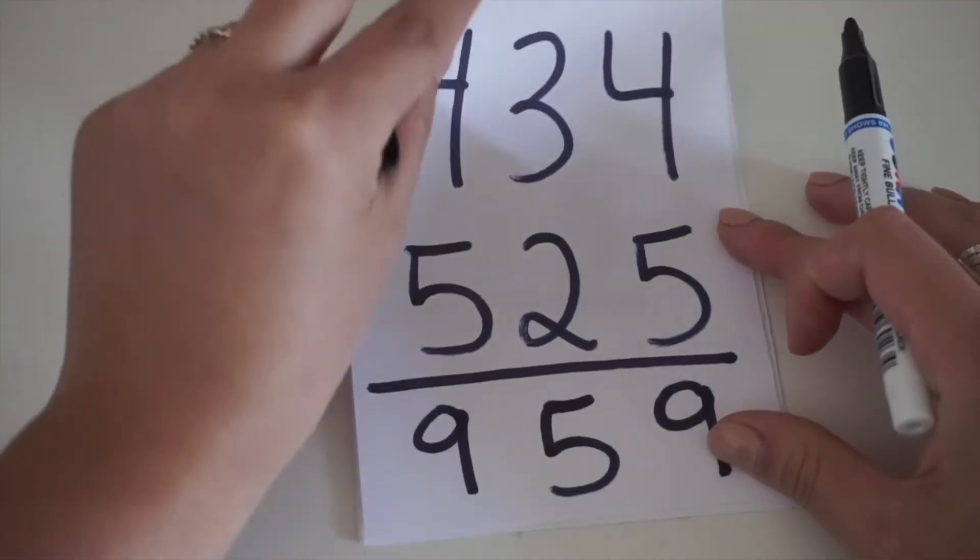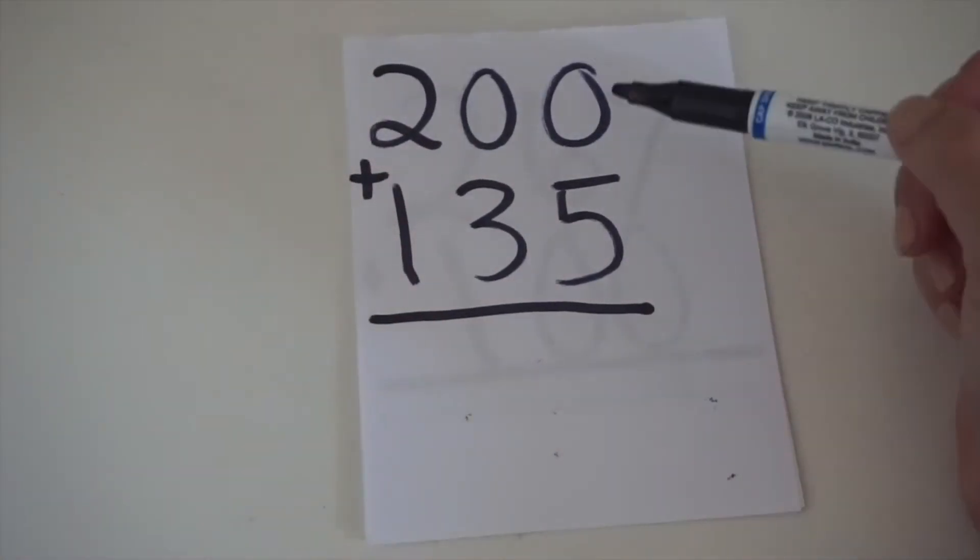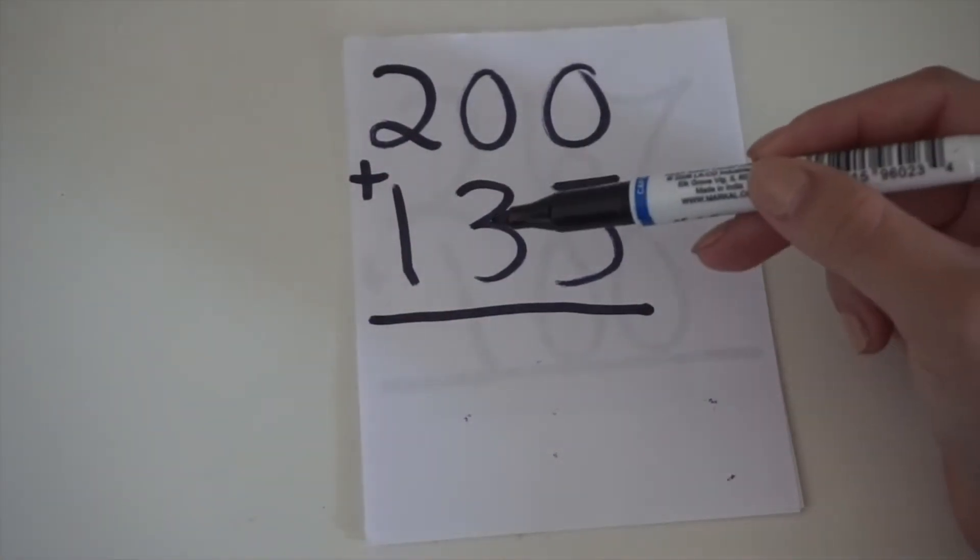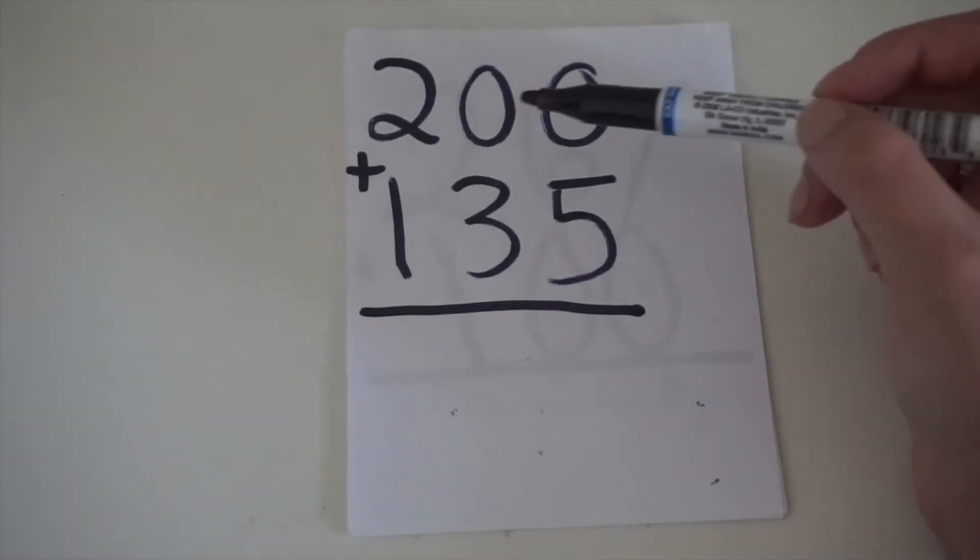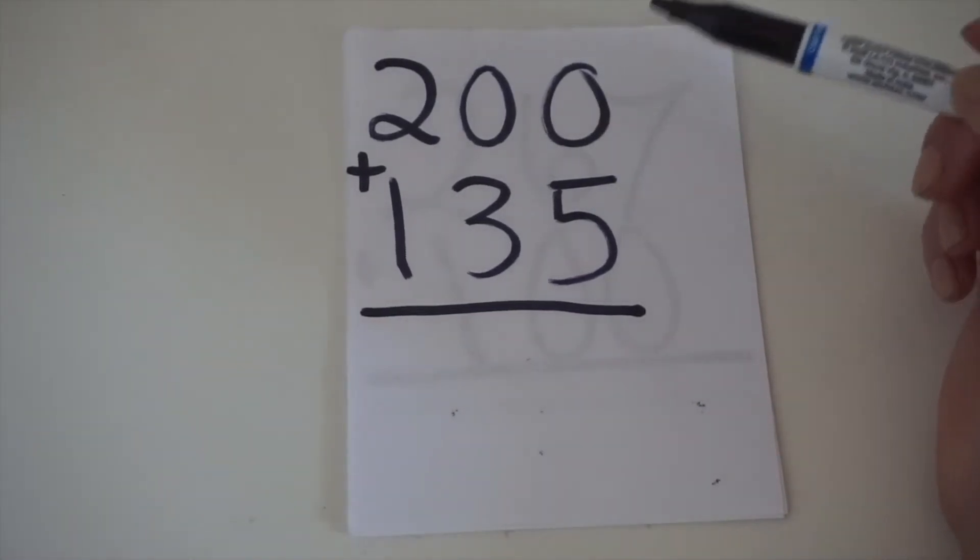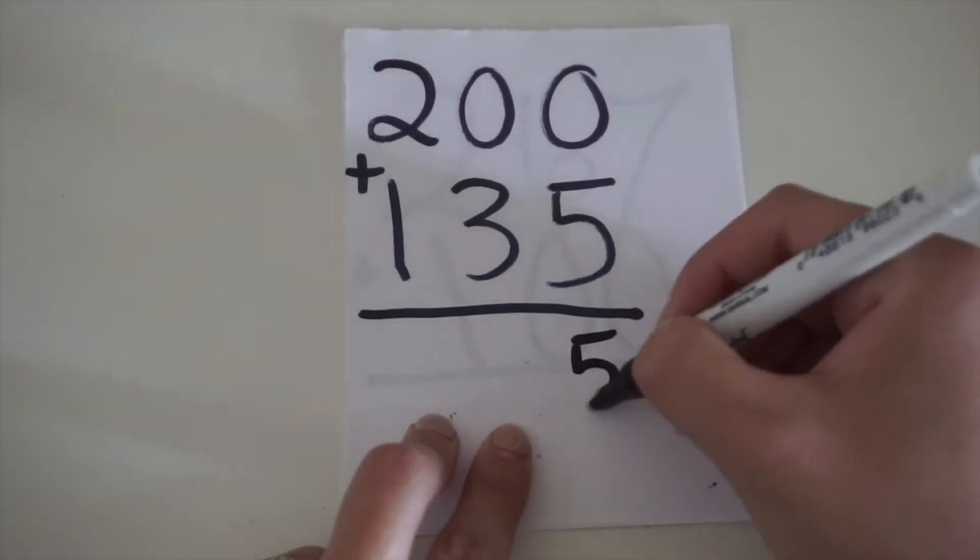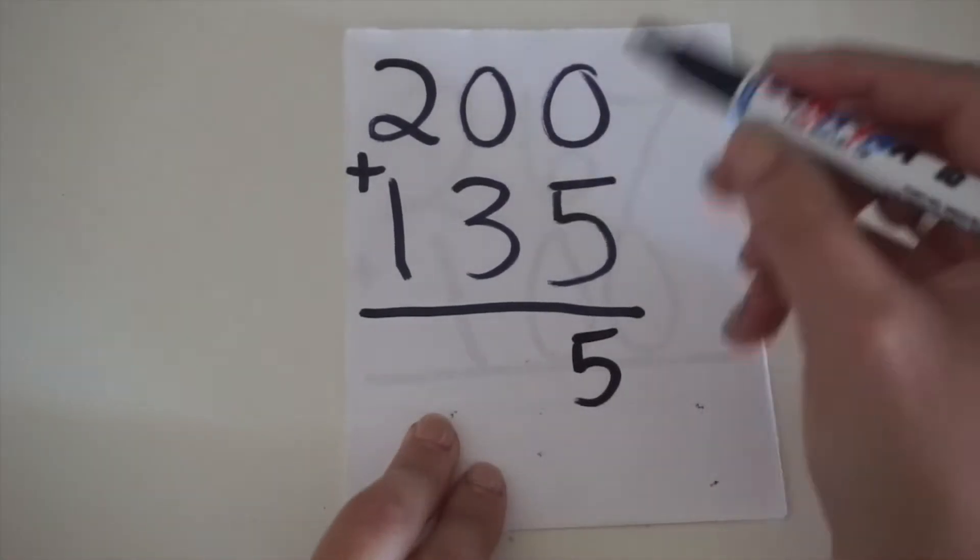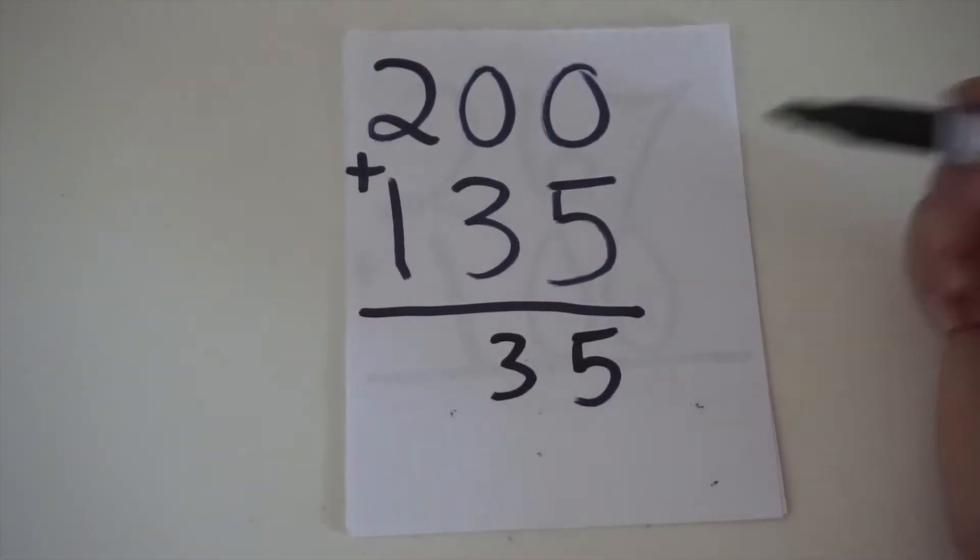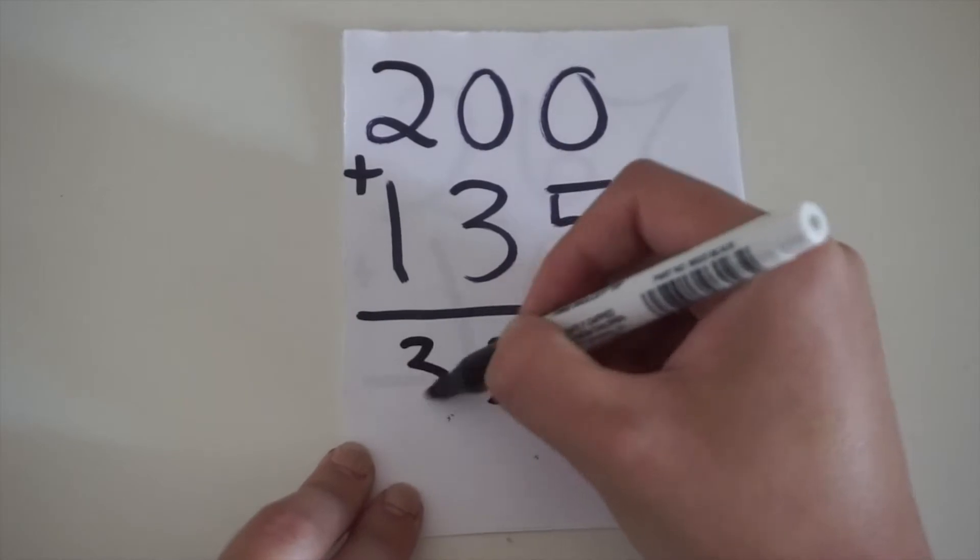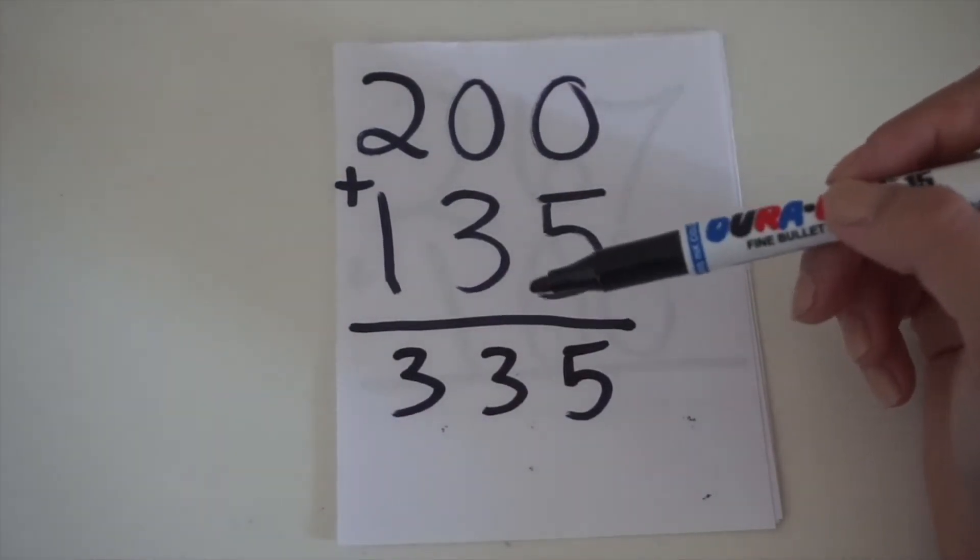For our next equation, we have 200 plus 135. This is a little bit easier because when we have zeros, there's not really much work that we need to do. 0 plus 5 equals 5, 0 plus 3 equals 3, and 2 plus 1 equals 3. So, our answer to this equation is 335.